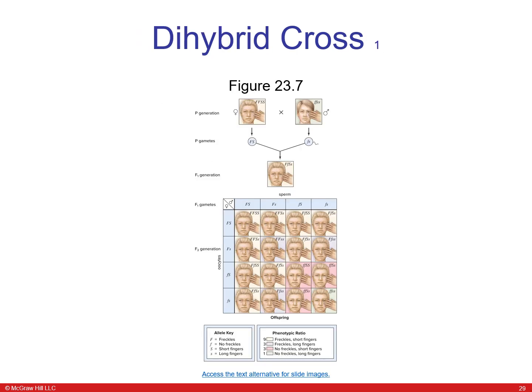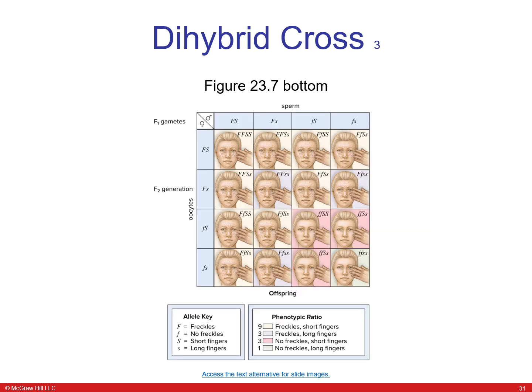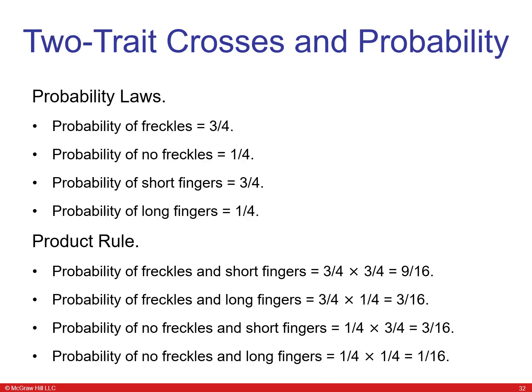Here is a Punnett square showing this dihybrid cross, with the gametes in the formation of the F1 generation. The dihybrid cross is demonstrated again listing all the probability of the crosses, and once again it shows the nine-to-three-to-three-to-one ratio.